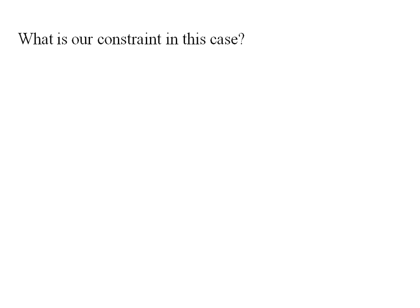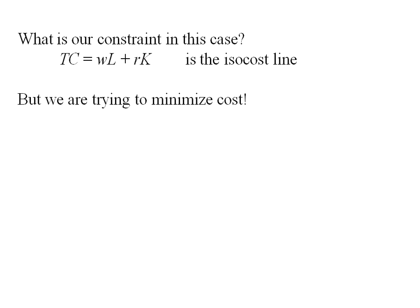The constraint in this case—well, total cost is WL plus RK, and that's our isocost line. When we're doing the consumer problem, it's kind of like the budget constraint. But in this case, it's actually what we're trying to minimize. It's our objective function.